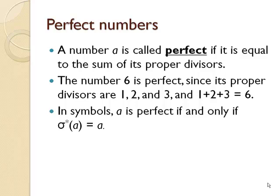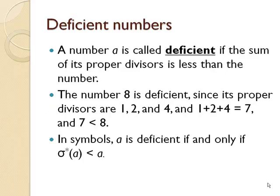A number is deficient if the sum of the proper divisors is less than the number. 8 is deficient. Its proper divisors are 1, 2, and 4, which add to 7. And 7 is less than 8, so we say it's deficient if sigma star is less than the number we have.